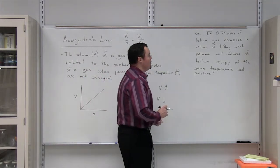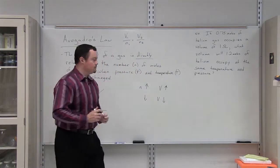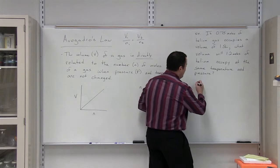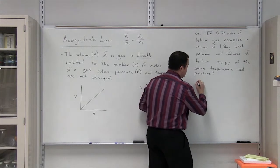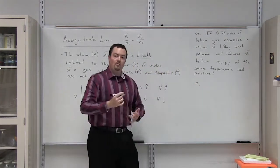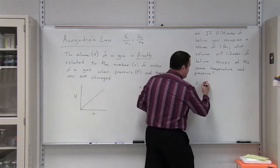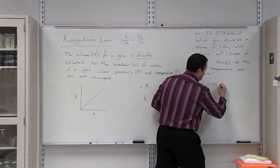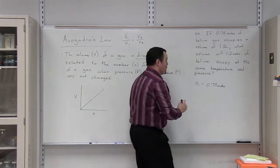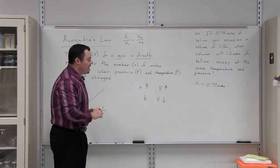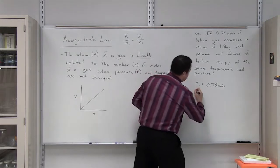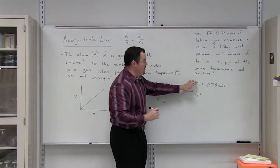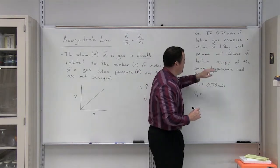In order to solve for V2, we need to determine what values, what variables, are given to us in the problem. We are told the number of moles under condition 1 is 0.75 moles. We are also told that V1, the volume of this 0.75 moles, is 1.5 liters.